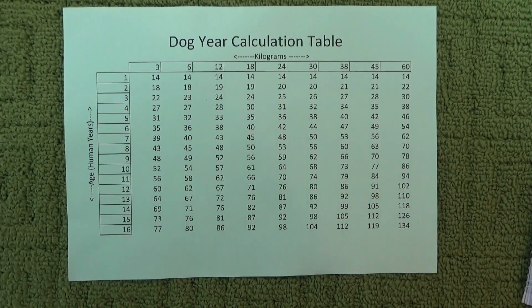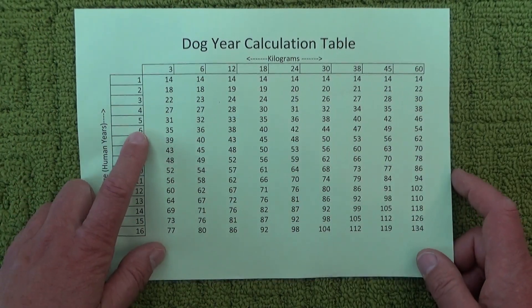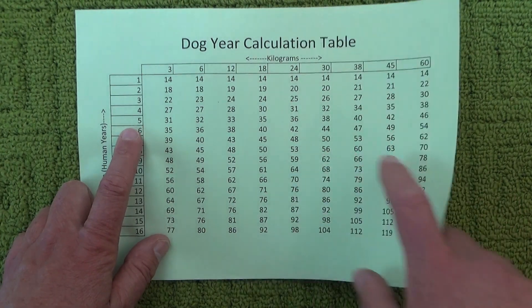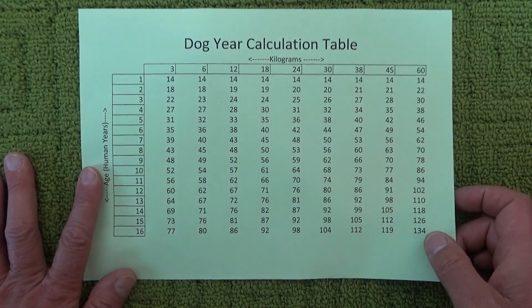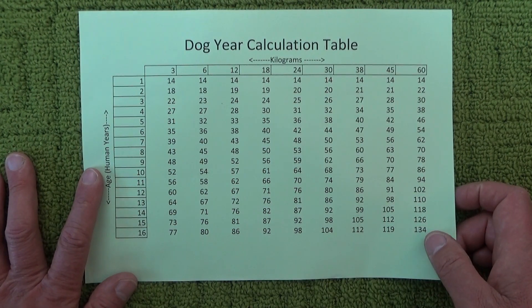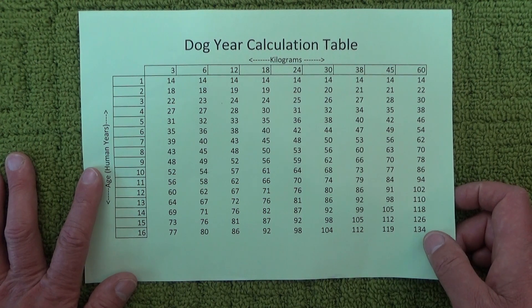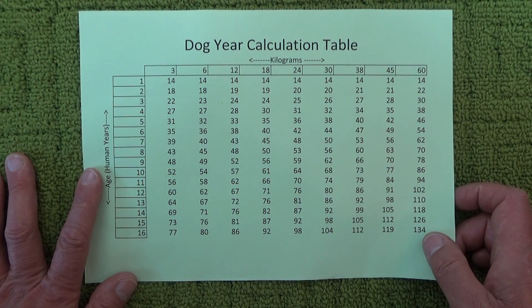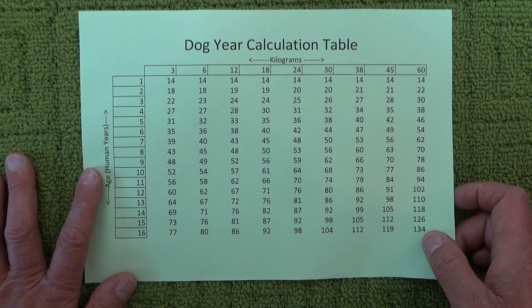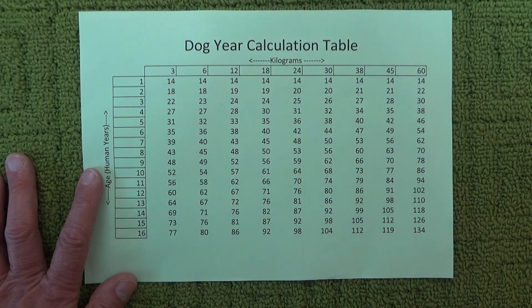That's a simple way of converting your dog's age into dog years and making your dog's age more comparable with a human's age. I hope you've enjoyed this video. Thanks for watching, and goodbye for now.